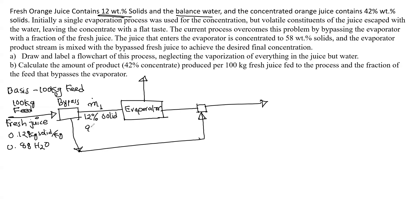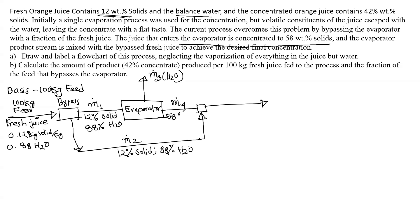The bypass stream composition is 80% water. This composition is the same as the feed. The bypass stream is M2, with 12% solid and 88% water. M3 is the water stream. M4, the evaporator contents, is 58% solid. The product M5 is 42% water — so M5 is 58% solid. The product composition is finalized.